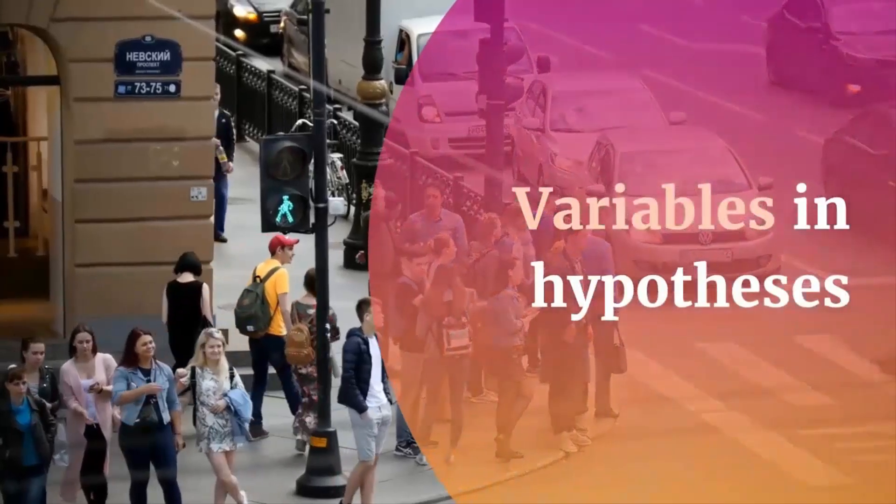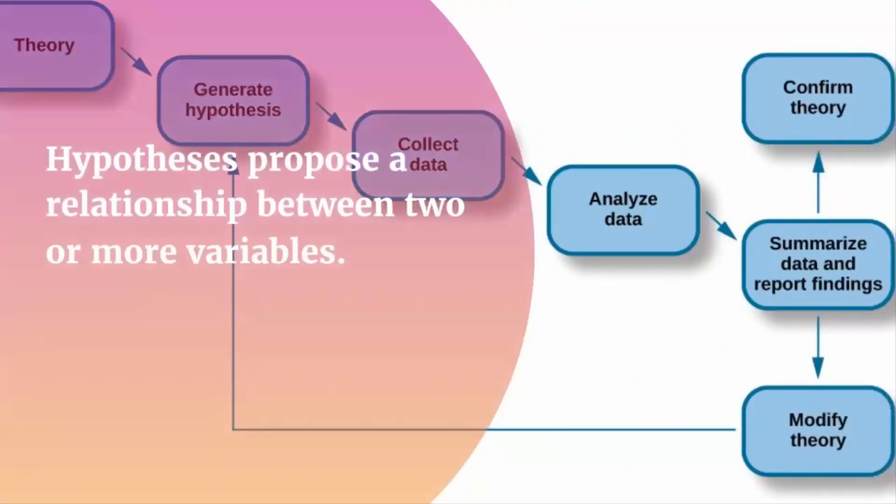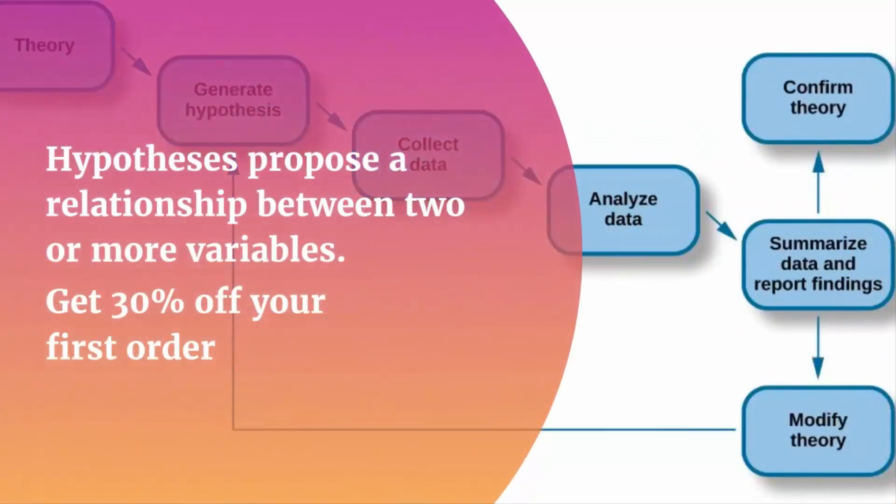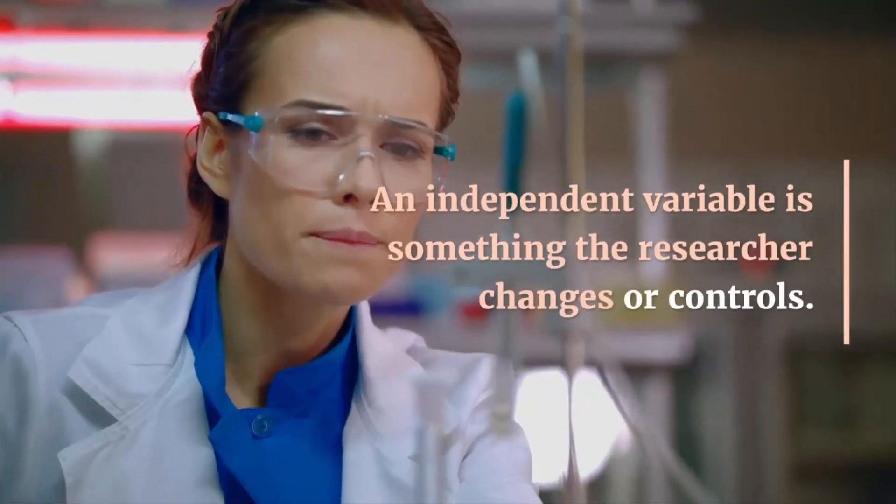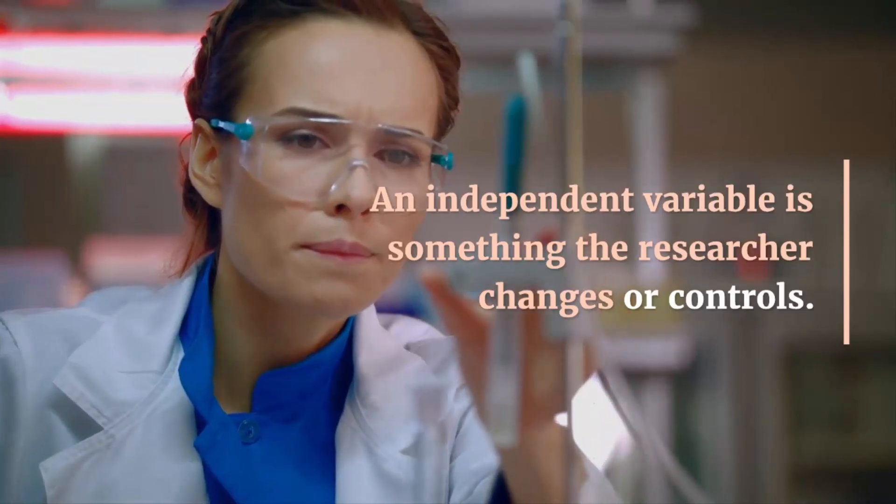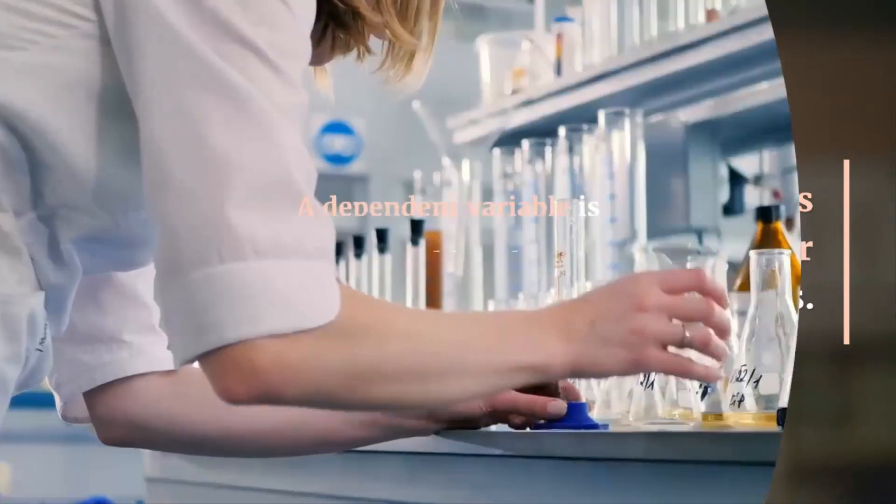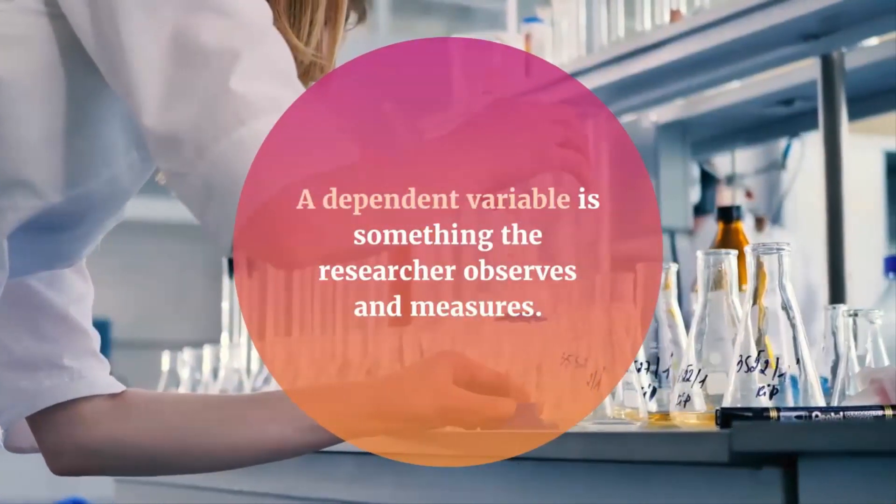Variables in hypotheses. Hypotheses propose a relationship between two or more variables. An independent variable is something the researcher changes or controls. A dependent variable is something the researcher observes and measures.